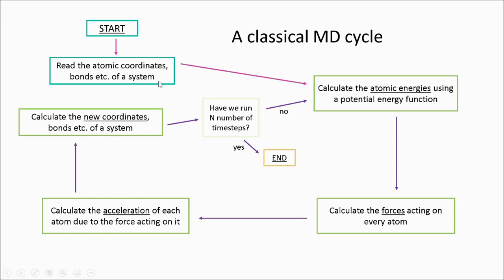Then, the atomic energies are calculated using our potential energy function. From these energies, the force acting on each atom is computed. The forces can be used to calculate the acceleration of each atom in a particular direction. These are then used to generate new coordinates for each of our atoms, as well as their new velocities.